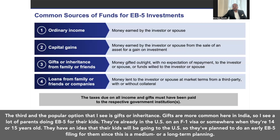The third popular option is gifts or inheritance. Gifts are more common here in India. I see a lot of parents doing EB5 for their kids who are already in the US on an F1 visa, or when their children are 14 or 15 years old and they have an idea that their kids will be going to the US. So they plan to do an early EB5 filing for them, since this is a medium or long-term planning.